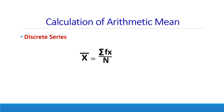Now let us see how the arithmetic mean is calculated in a discrete series. Here, x̄ is equal to Σfx divided by n. The x is multiplied by the frequency of its occurrence. So Σfx / n is the formula used in the case of discrete series to find the arithmetic mean.